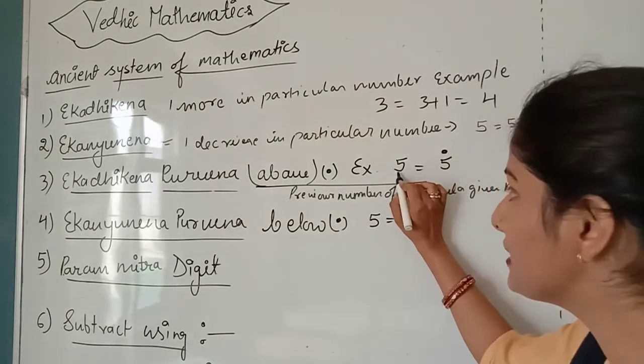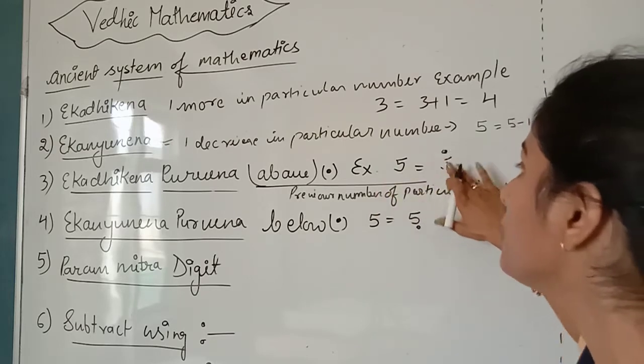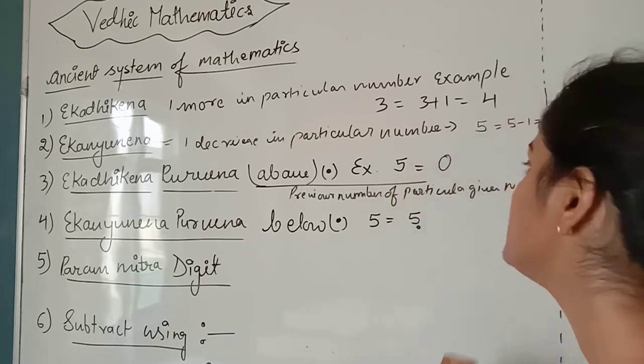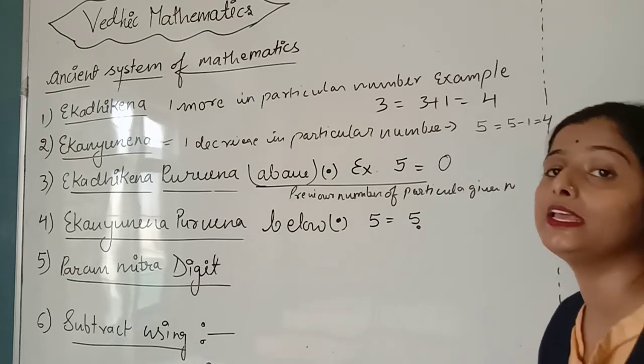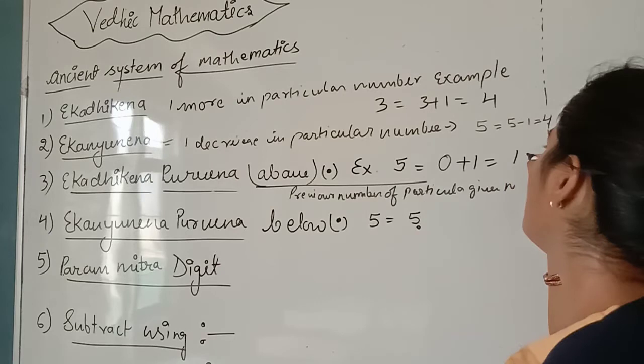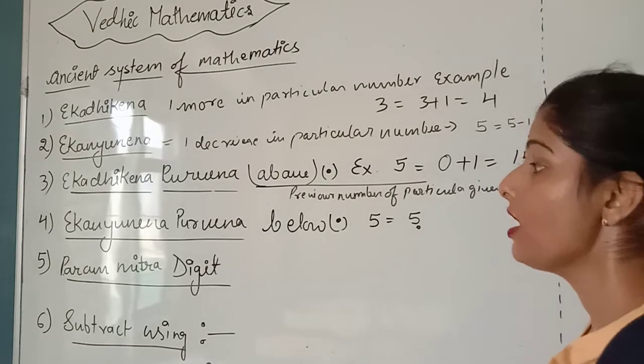Suppose you have an example of 5. Before 5 there is nothing, so it's zero. And in zero you have to do Ek Adhik. That means 0 plus 1 equals 1, then 1 and 5, so it becomes 15.